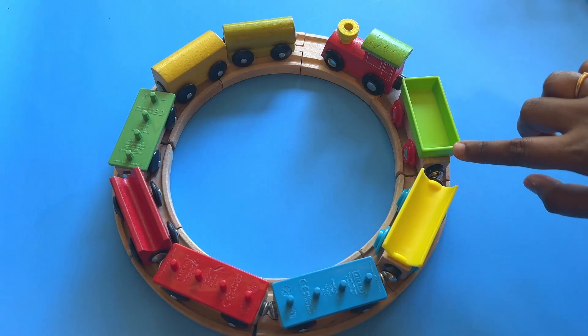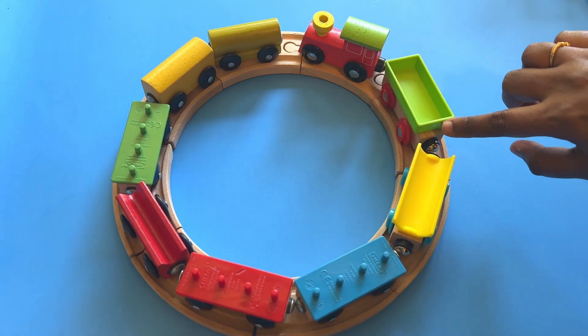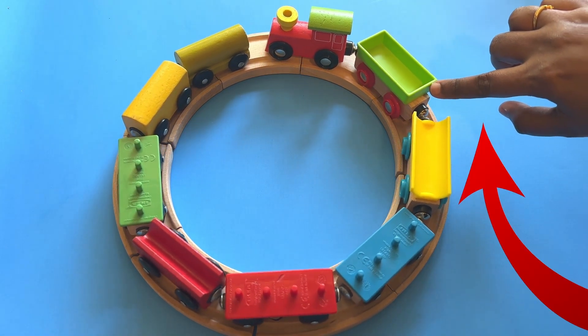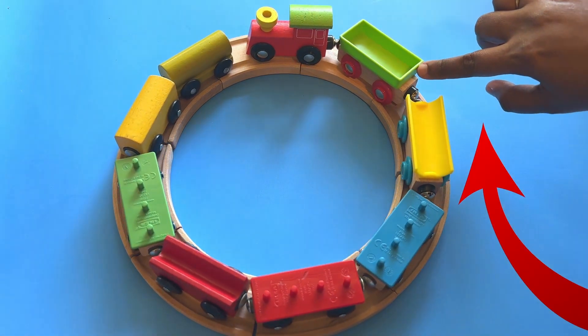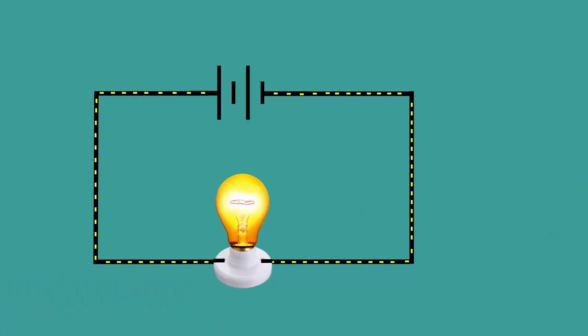This movement of electrons, or in other words, this flow of electrons is called the current. If you see carefully, here the flow of electrons occurs due to the force I'm giving on these electrons. This force is called the electromotive force, or in other words, voltage.